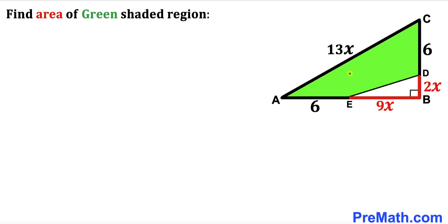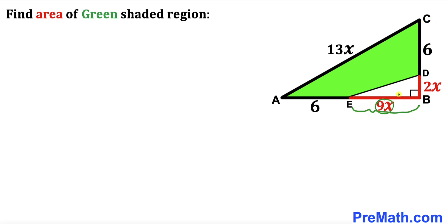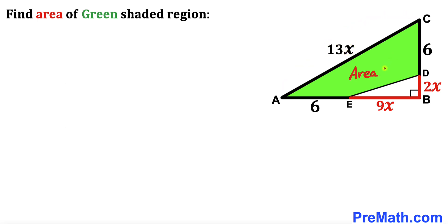Welcome to PreMath. In this video we have this green shaded quadrilateral AEDC fully confined in right triangle ABC, such that segment AE is 6 units and segment CD is 6 units as well. Segment EB is 9x, segment BD is 2x, and the hypotenuse AC is 13x. Our task is to calculate the area of this green shaded region.